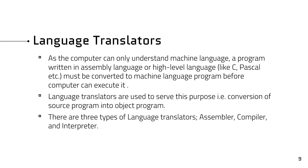As the computer can only understand machine language, a program written in assembly language or a high-level language like C or Pascal must be converted to machine language before a computer can execute it. Language translators are used to serve this purpose — that is, conversion of a source program into an object program.